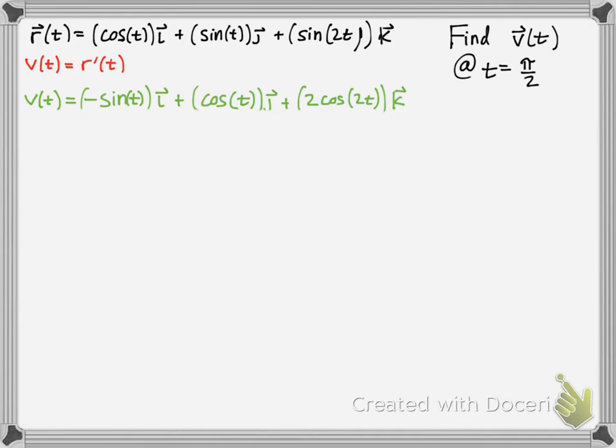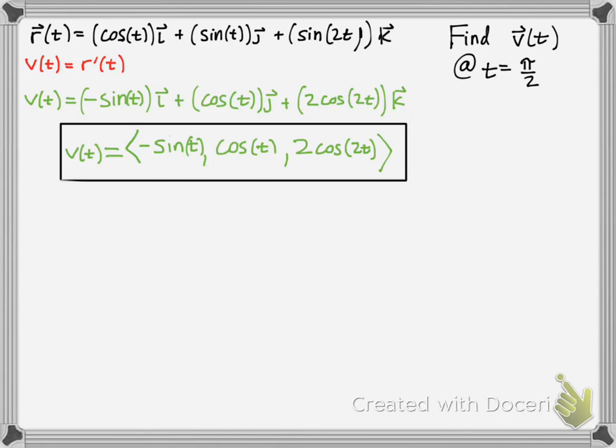Make sure you show the i, j, and k component. It can also be written like this, vector notation. You can use these kind of parentheses, but not quite, nor brackets. That's just another way of denoting vectors.